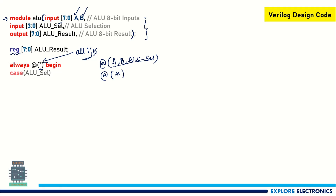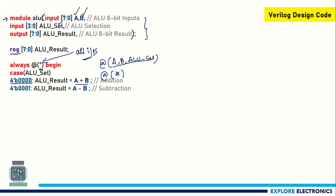After 'always begin', I use a case statement: 'case (ALU_select)'. For 4'b0000, ALU_result equals A plus B — this is addition. For 4'b0001 it is subtraction. For 4'b0010 it would be multiplication, but I have commented that out because the ALU result is declared as [7:0], which is only 8 bits.